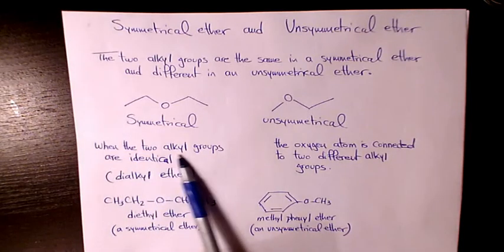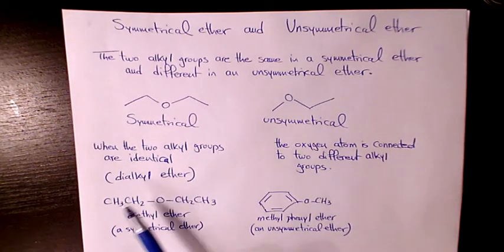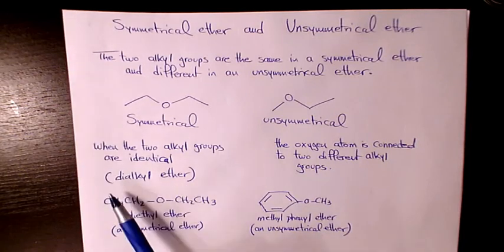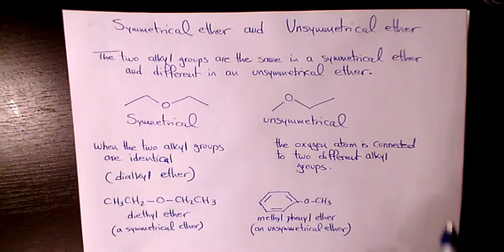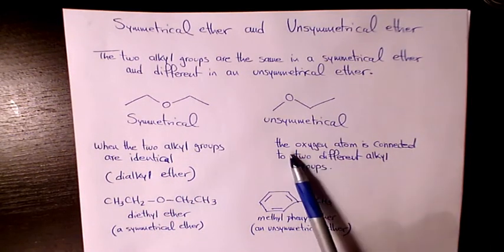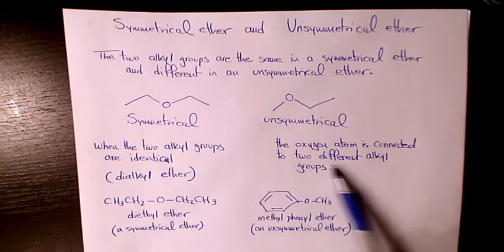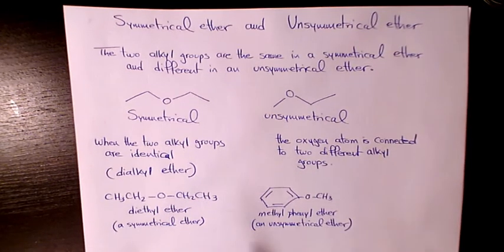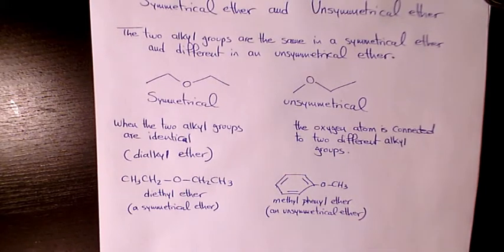When the two alkyl groups are identical, we call it symmetrical, and it's generally called Dialkyl Ether. In unsymmetrical ethers, the oxygen atom is connected to two different alkyl groups. I have two different examples here.